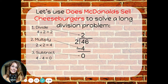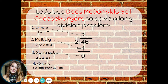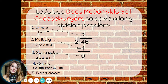Cheese stands for check. Now it's time to check — we want to make sure that the number we're left with after we subtract is smaller than our divisor. Is 0 less than 2? Yes. That's a good place to check that you've divided, multiplied, and subtracted correctly. The next step is burger, which stands for bring down. Here is where I bring down the next digit in my dividend, which is a 6, to sit next to the 0.